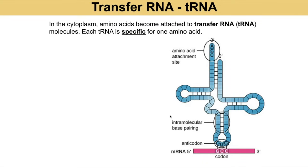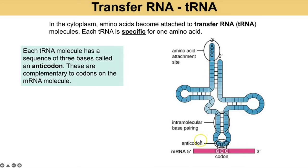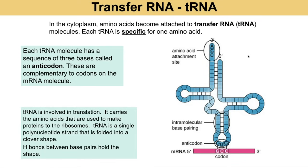tRNA is transfer RNA and is found in the cytoplasm. It has an amino acid binding site, and each tRNA molecule will have a specific amino acid attached. The tRNA molecule also has three bases at the bottom called the anticodon, which will be complementary to a particular codon on mRNA. When those align they're held in place so that amino acids can start to bond together during translation. tRNA is involved in translation — the second stage of protein synthesis. It has a clover leaf shape, which is single-stranded but folded, held in place by hydrogen bonds.